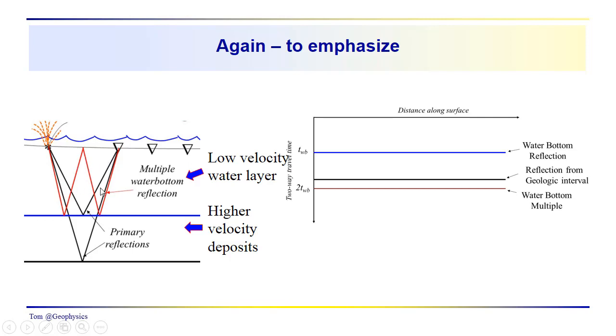We have a double reflection from the water bottom. This is our multiple. The multiple shows up at twice the water bottom arrival time, and that's usually the giveaway there.